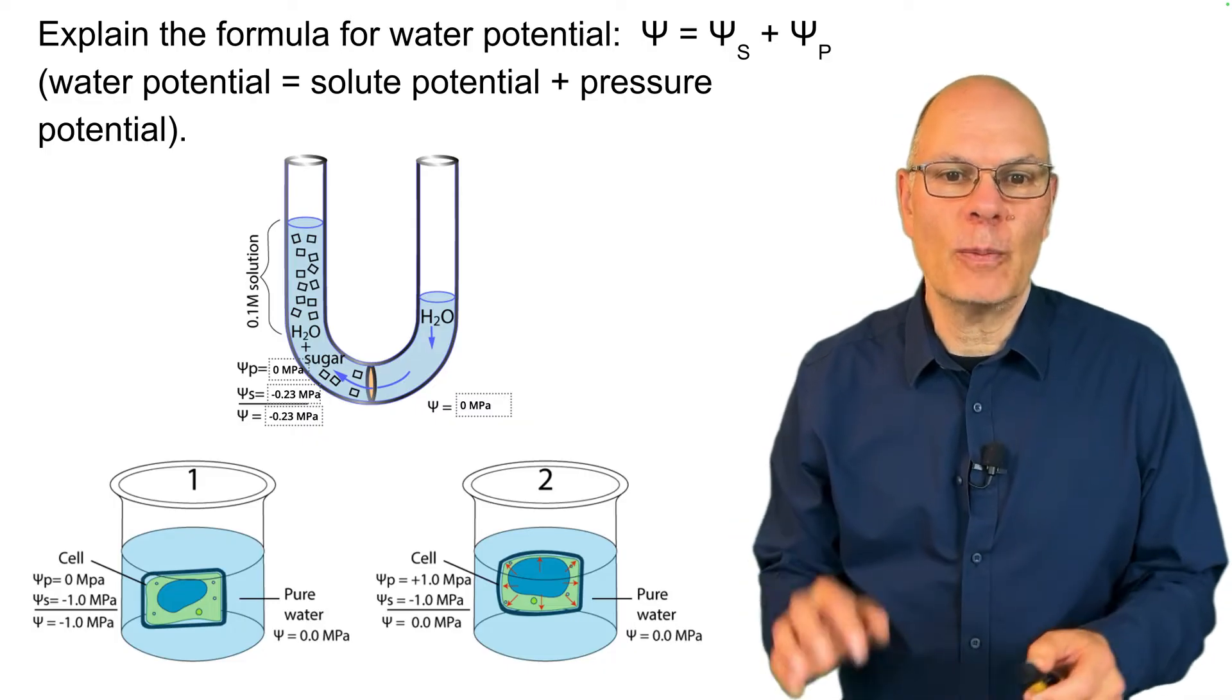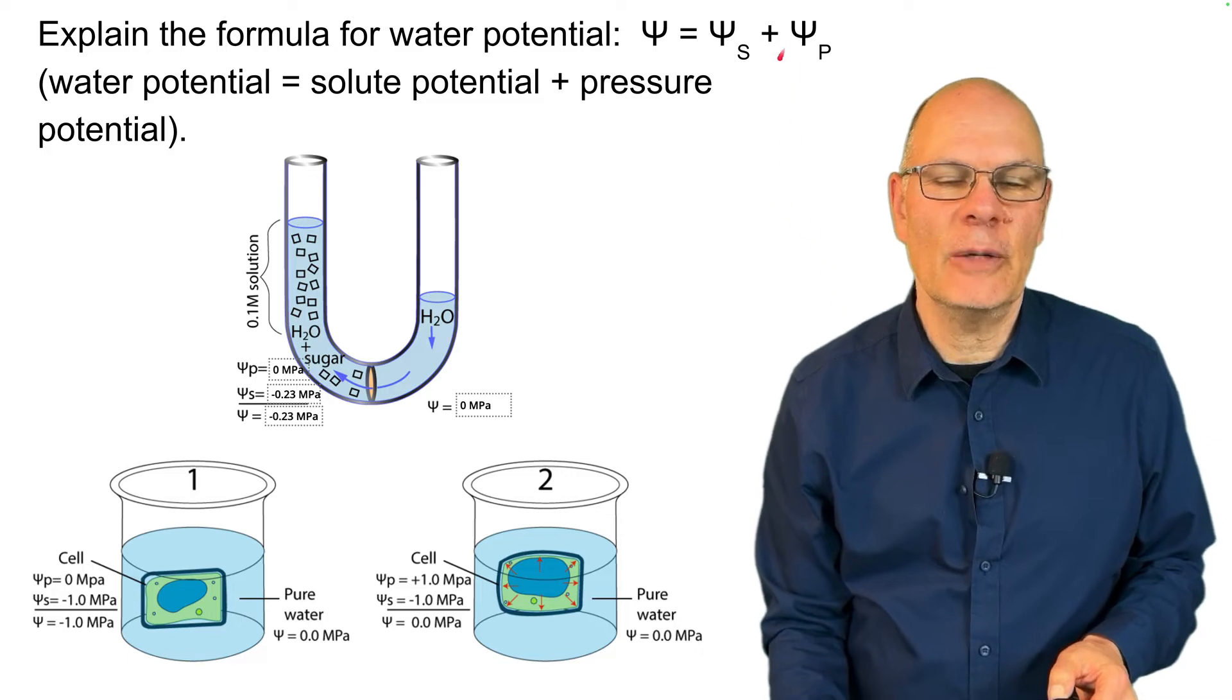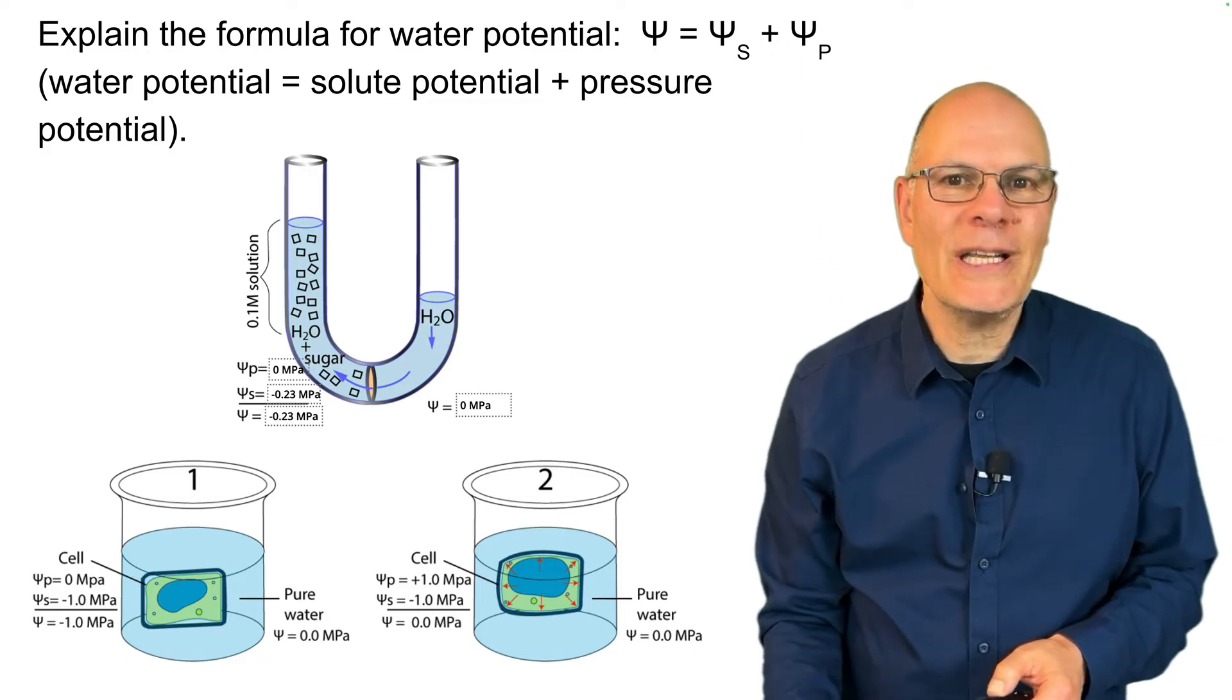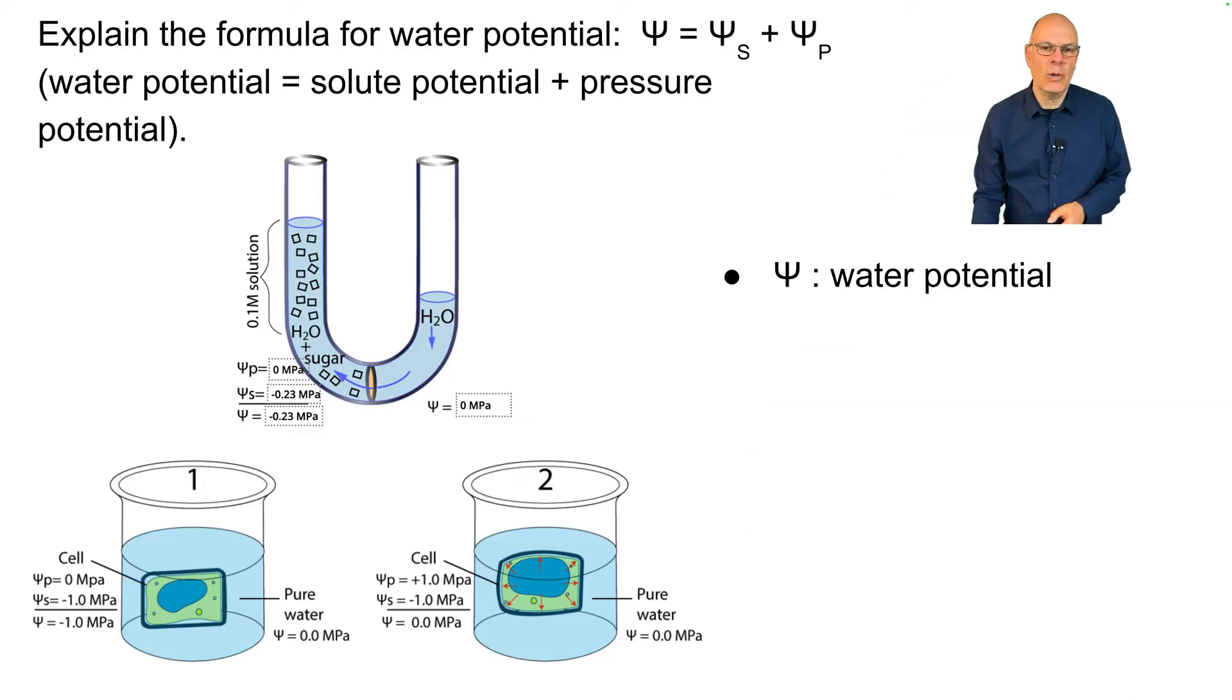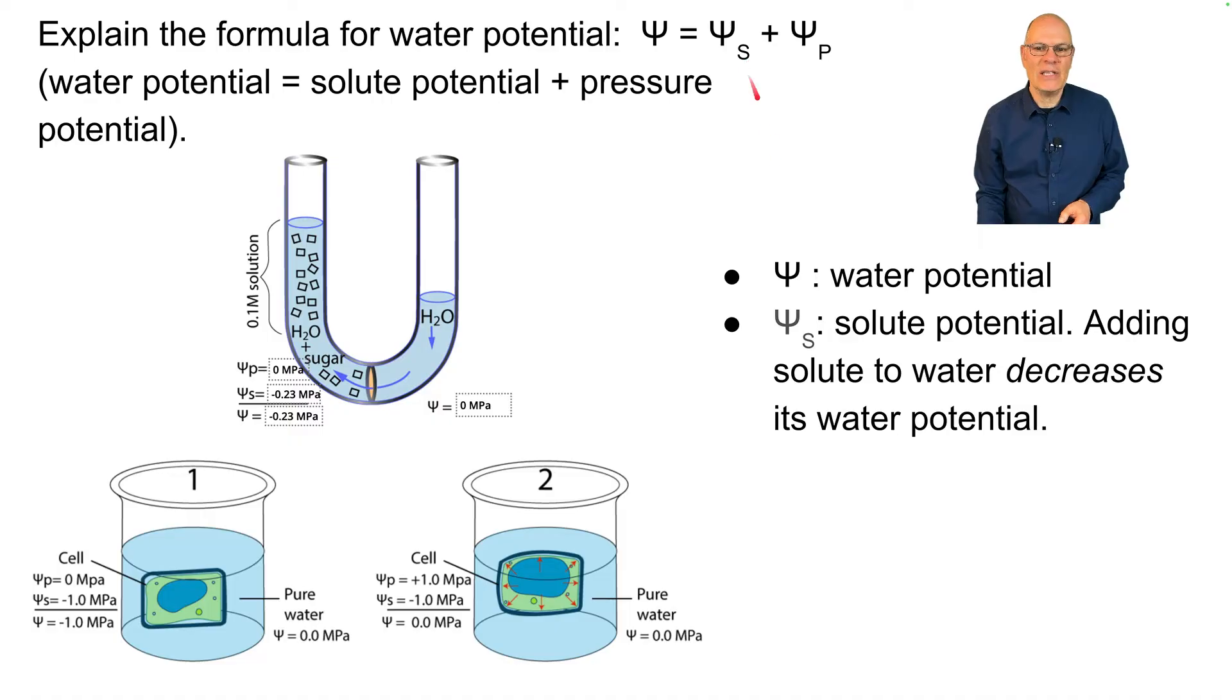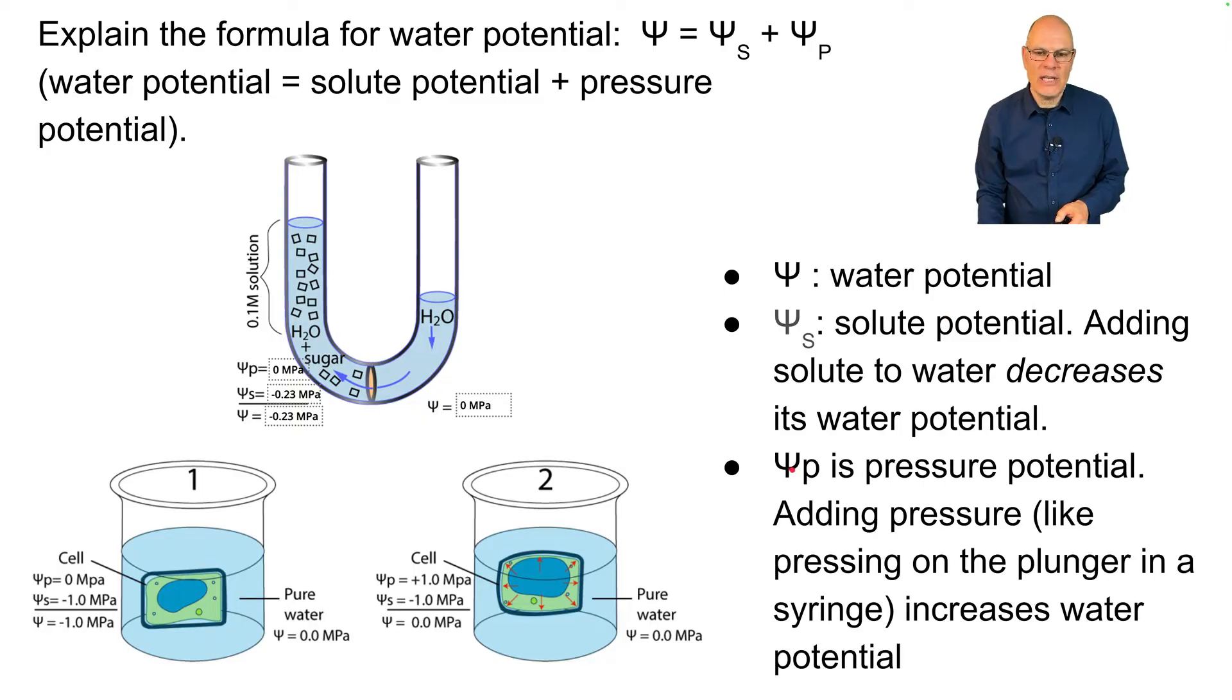Explain the formula for water potential. Here it is. In plain English, water potential equals solute potential plus pressure potential. Ψ is water potential. Ψs is solute potential, and remember that adding solute to water decreases its water potential. Ψp is pressure potential. Adding pressure, like pressing on a syringe, increases water potential.